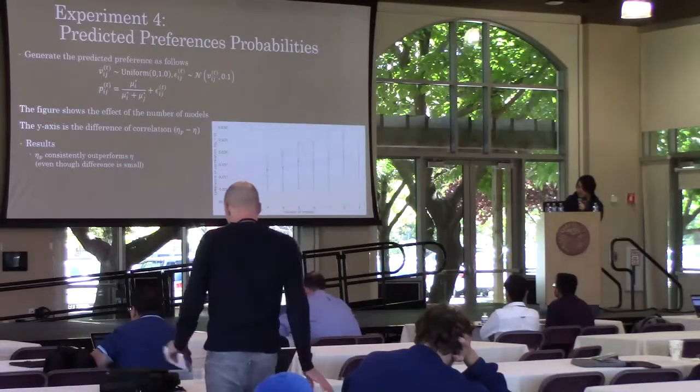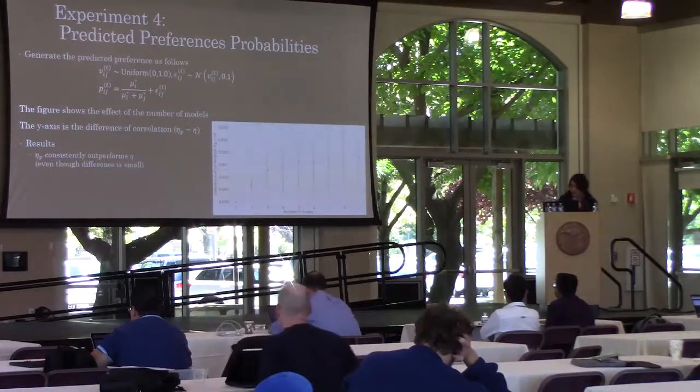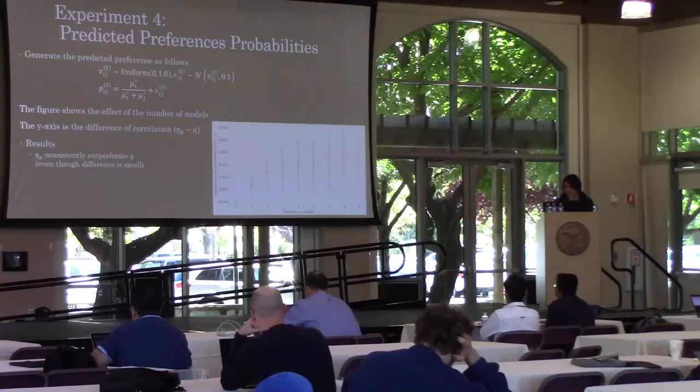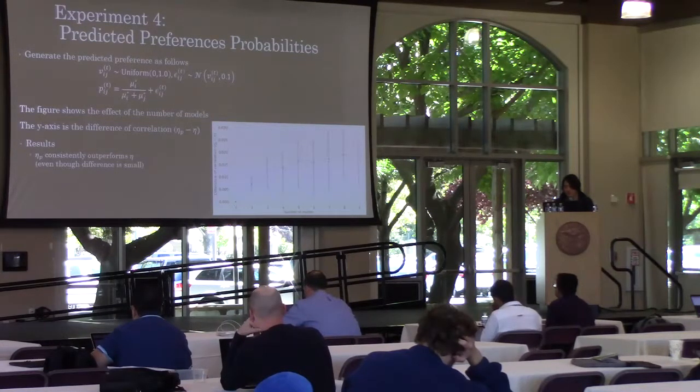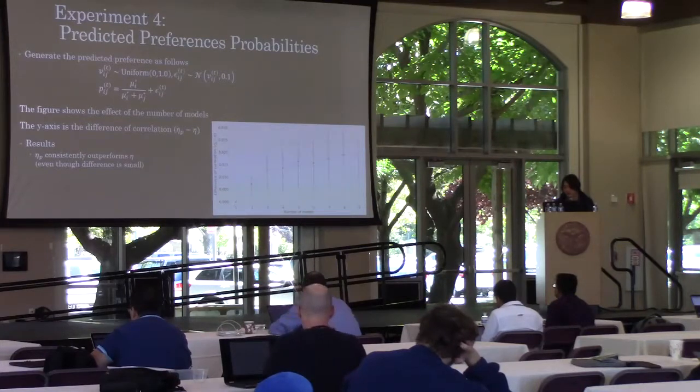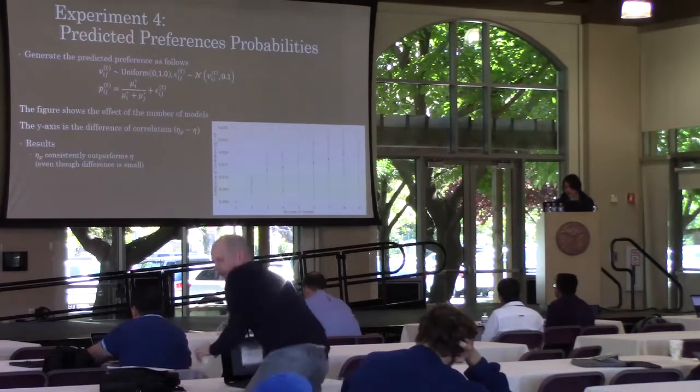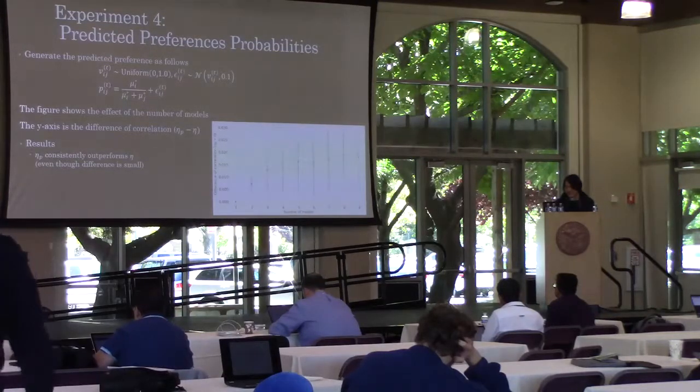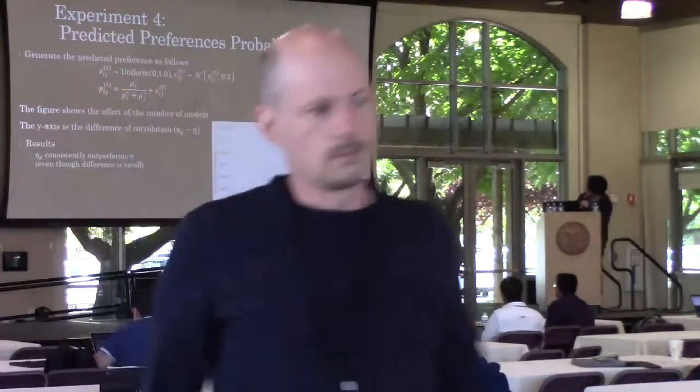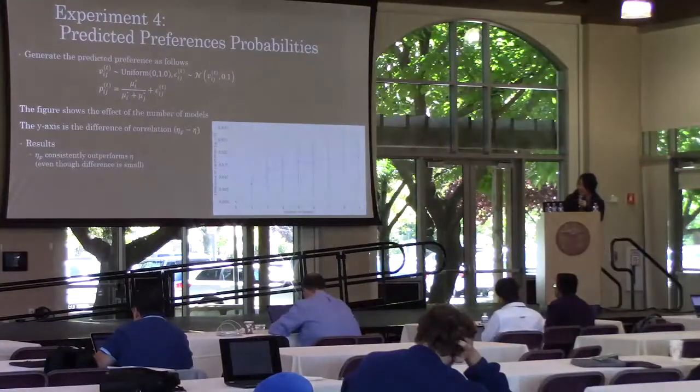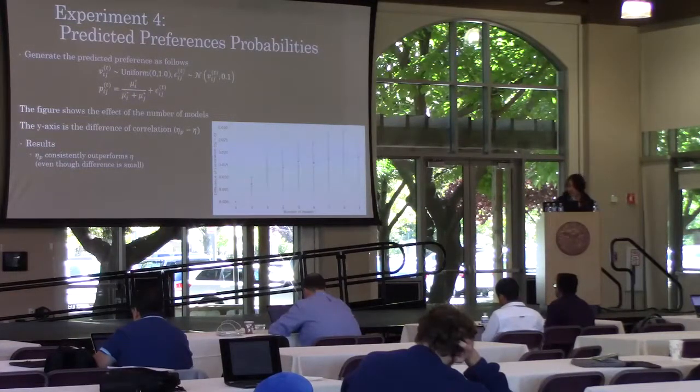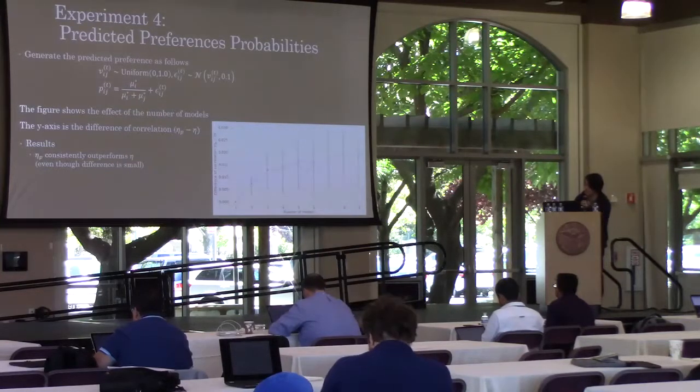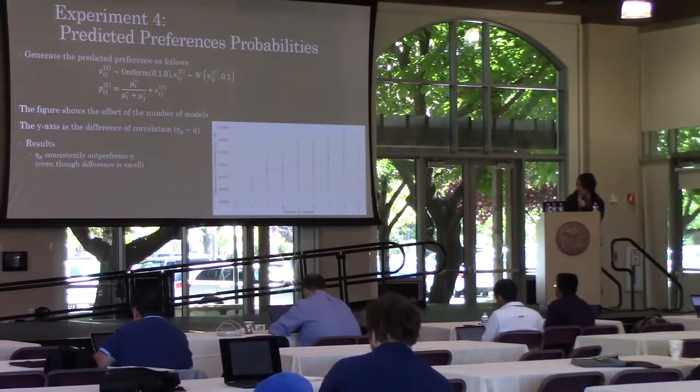In this experiment, we compared the eta and eta-P measures. The figure shows the effect of the number of probabilities for each document pair, the number of models for each document pair. The difference between eta and eta-P is larger as the number of probabilities increases. The y-axis is the difference of the correlation of eta and eta-P. Eta-P consistently outperforms eta, even though the difference is small.